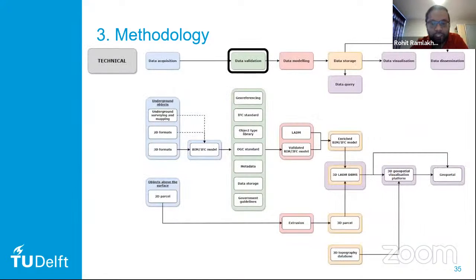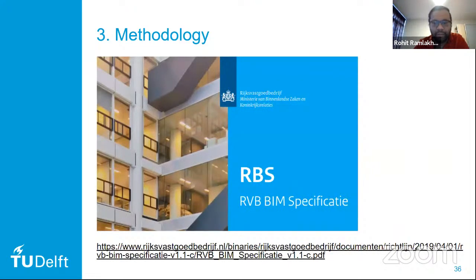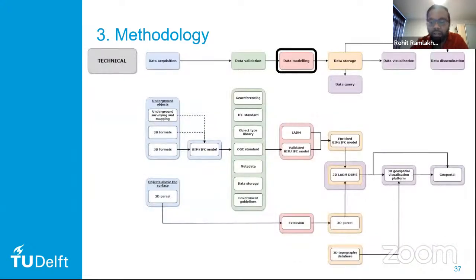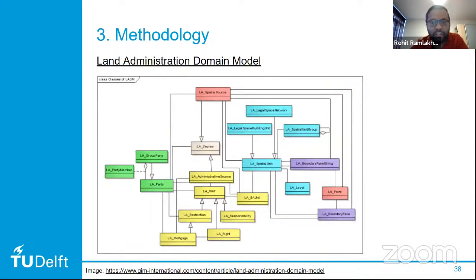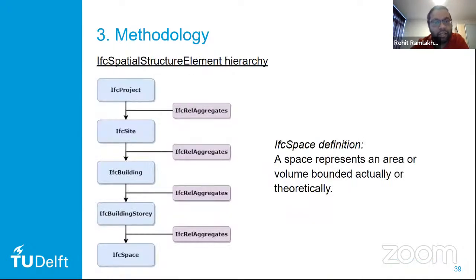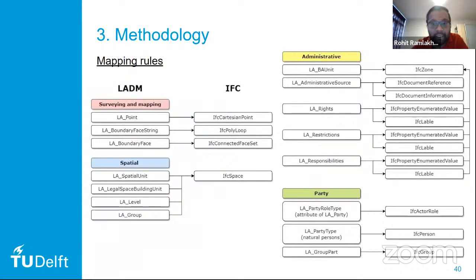You can also see here the government guidelines. Even though they're just guidelines and specifications and not legally required, I would still want to comply with them. This is an example of a BIM specification of the Dutch national government. Then follows the data modeling, where you have the land administration domain model with several main packages in different colors, where these classes will be mapped to the IFC model standard. Here you see the IFC spatial structure elements hierarchy, and IFC space is the most important mapping element.